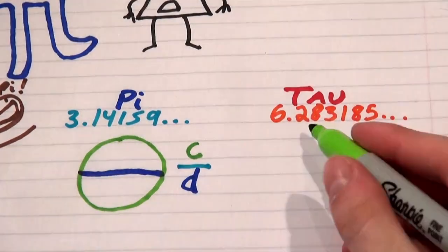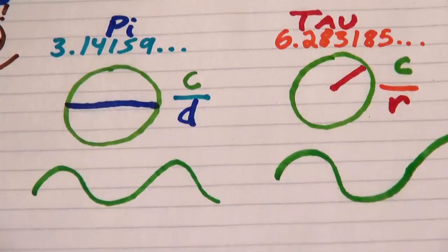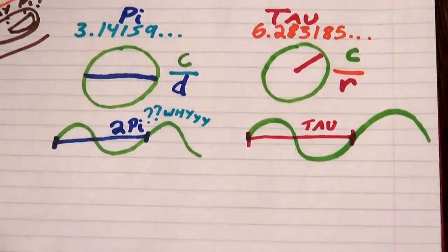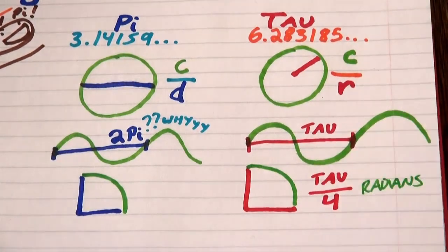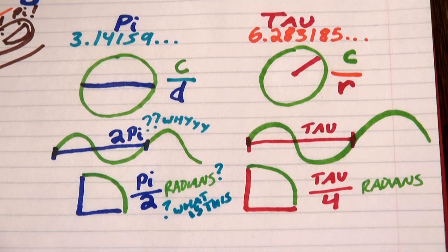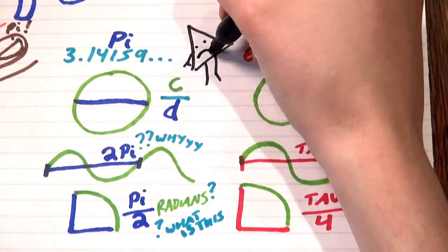Sure, many mathematicians agree that Pi is wrong, Tau is a beautiful number that speaks naturally to circles and waves, but we can't change the past. Pi might not be the number we want, but it's the number we got. And perhaps it's the number we deserve.